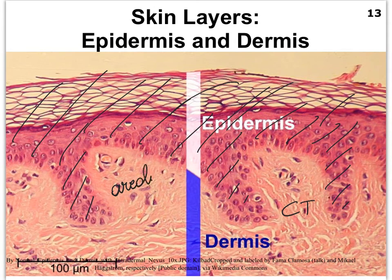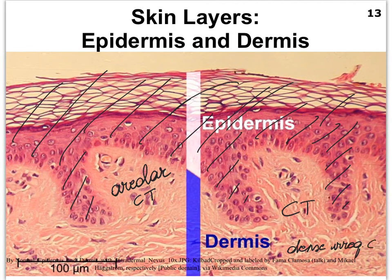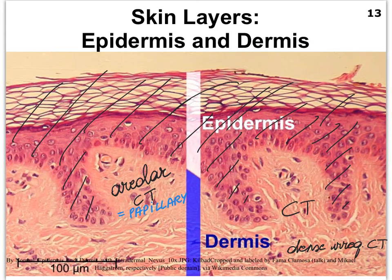Just deep to the epidermis we're going to see loose areolar connective tissue, and as we go deeper into the dermis we end up in dense irregular connective tissue. These two sub-layers have names. The layer made up of areolar connective tissue we refer to as the papillary layer, while the layer of dense irregular connective tissue we call the reticular layer.